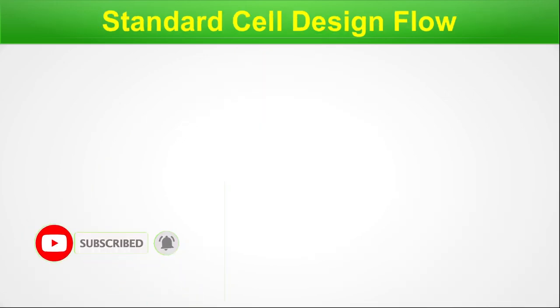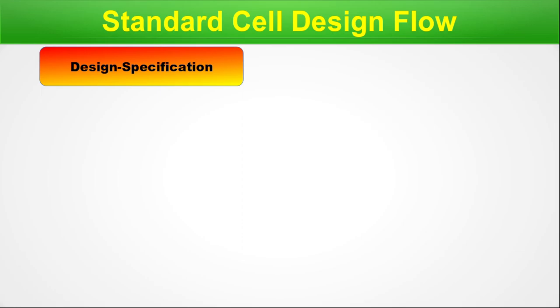Standard cell design flow. Here we discuss the design flow of each individual standard cell covering different views. The flow shown is a mix of one or two or three flows practiced in standard cell design. First is the design specification — the cell being designed must have a specification: its intended functionality, drive strength, and all necessary things you'd find in a data sheet. Those specifications must first be gathered to make our intent clear before we design.